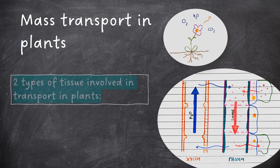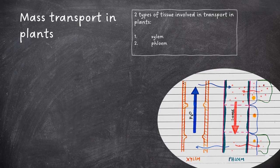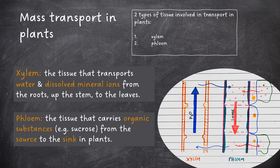There are two types of tissue involved in transport in plants: the xylem and the phloem. Xylem is the tissue that transports water and dissolved mineral ions from the roots up the stem to the leaves. Phloem is the tissue that carries organic substances such as dissolved sucrose from the source to the sink in plants.